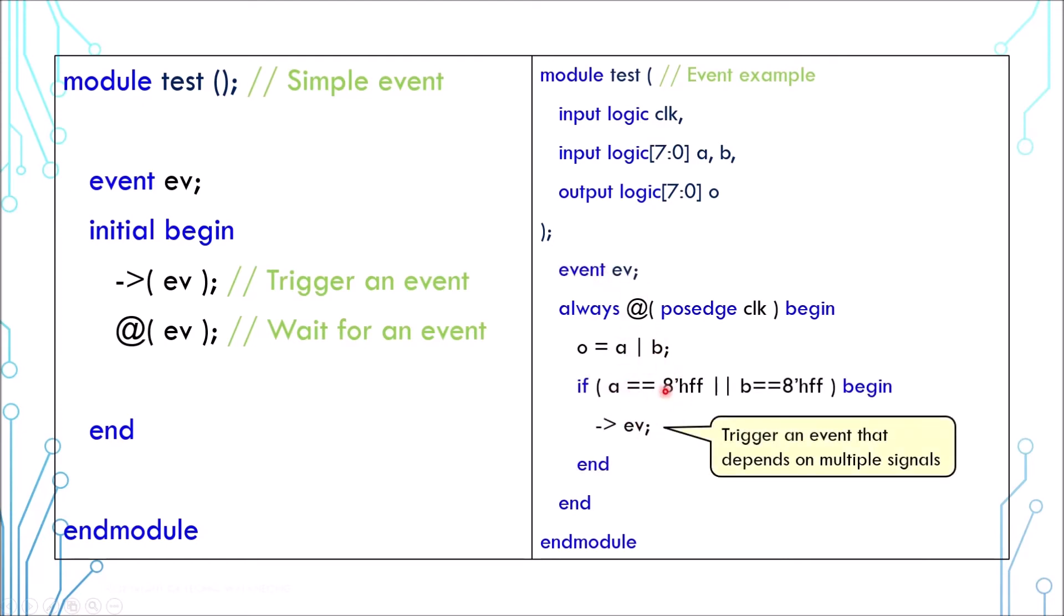The event depends on multiple signals: a, b, and clock. Apart from @, which can also be used on event, but since we expect an expression, we cannot use the event as is. It has to use a property called 'triggered', which can be accessed using the dot operator.